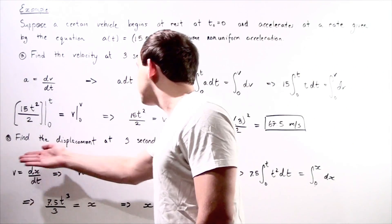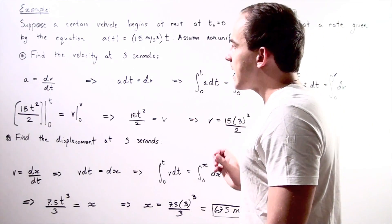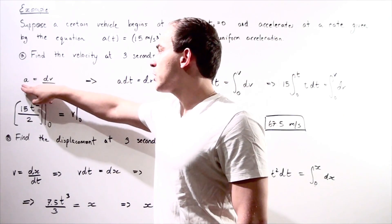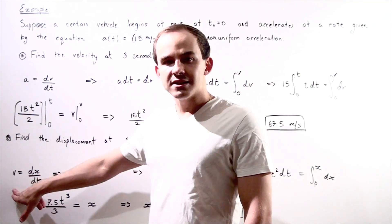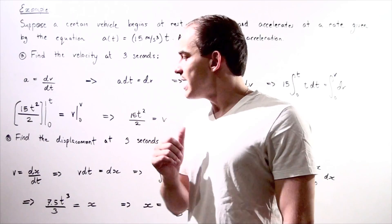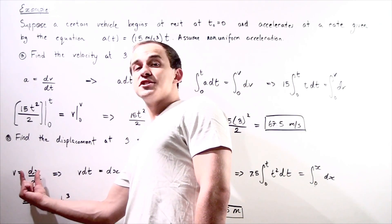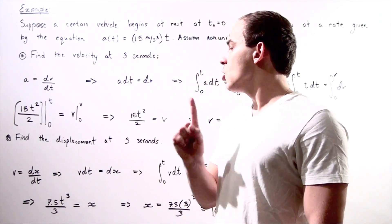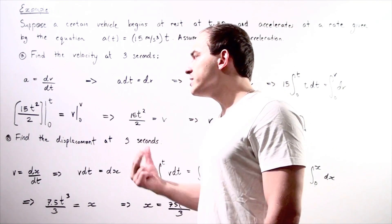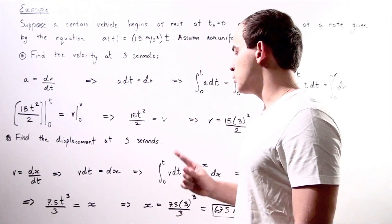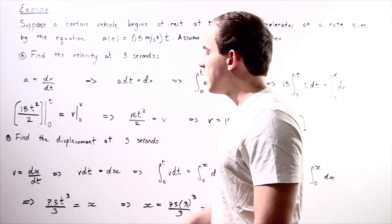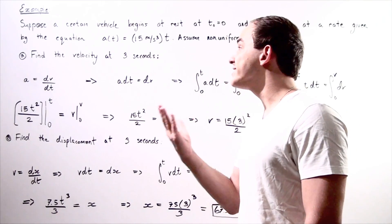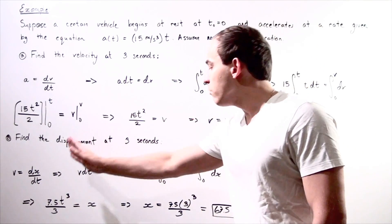Now let's go to part B: find our displacement at three seconds. This is the same process as part A, but now instead of using our equation for acceleration, we use our equation for velocity. Recall that instantaneous velocity is equal to the derivative of the displacement function with respect to time. Rearranging, our instantaneous velocity multiplied by our infinitely small change in time equals an infinitely small change in displacement. Let's take the definite integral of both sides.